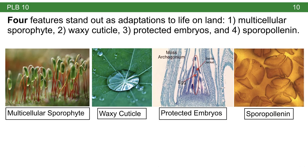Four features really stand out as adaptations in plants to life on land: a multicellular sporophyte, a waxy cuticle, protected embryos, and sporopollenin. We've talked about several of these features in previous lectures, but let's take a few moments to elaborate on some of their details.